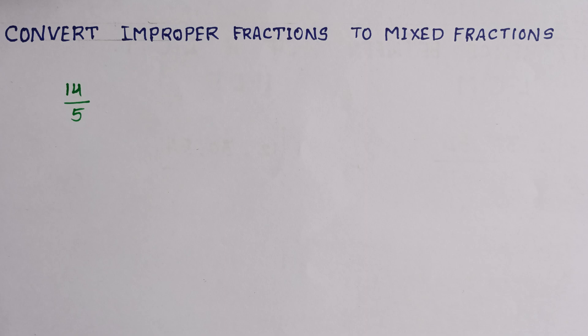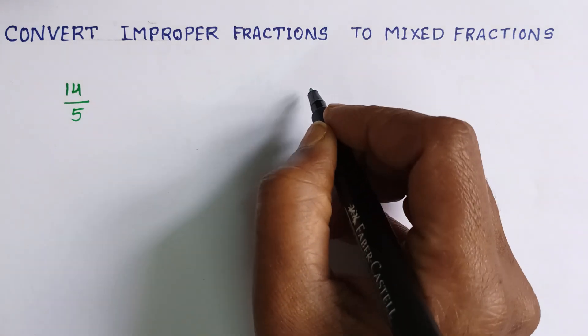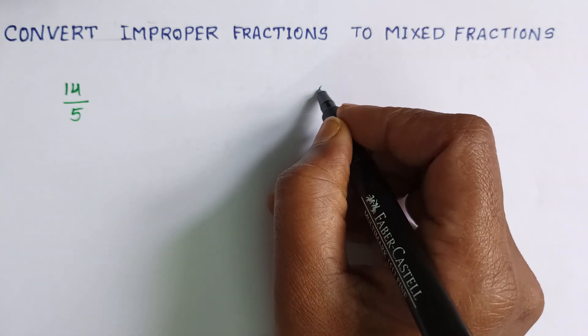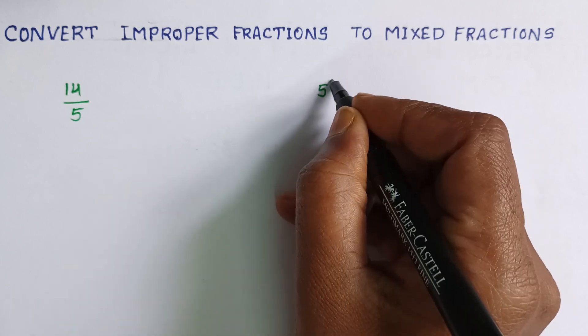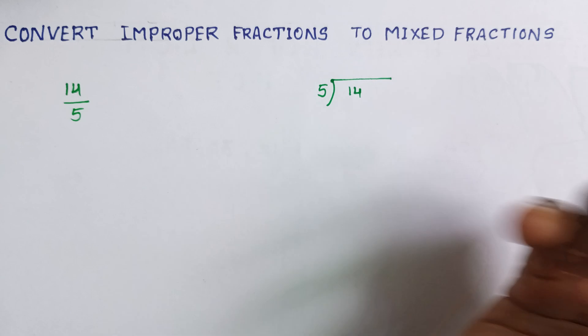So now we can see how to convert improper fractions to mixed fractions. Here 14 by 5 is there. We can divide 5 into 14, the same division.